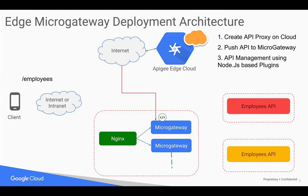Whenever clients try to access the API at slash employees through the internet or intranet, the call goes to the nginx load balancer, which routes it to the micro gateway where your API gets executed.